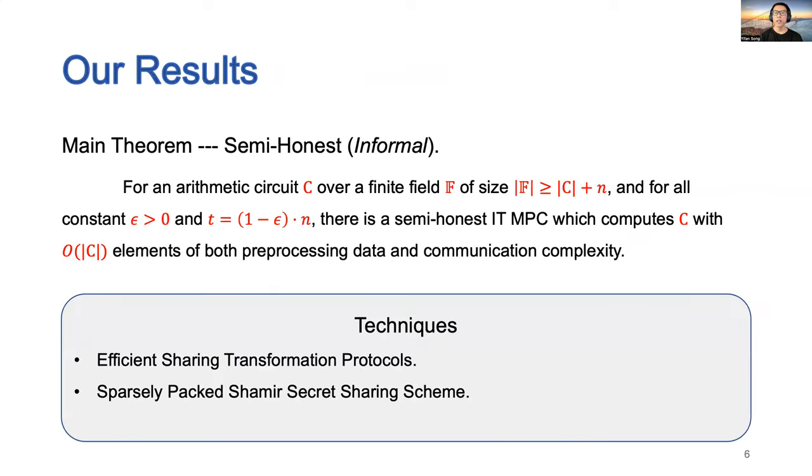In this work, we answer this question affirmatively by showing an MPC protocol with overall cost O(|C|) in both the amount of preprocessing data and communication complexity. Our idea is to use packed secret sharing to evaluate a single circuit. We rely on two new techniques: sharing transformation and sparsely packed Shamir secret sharing scheme.